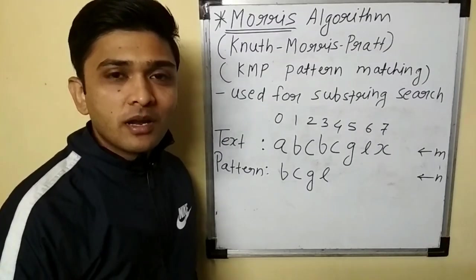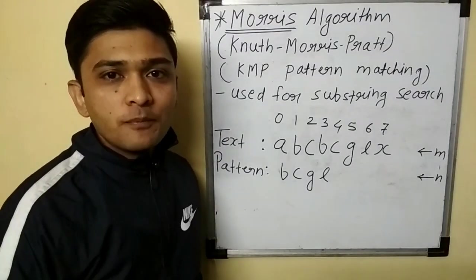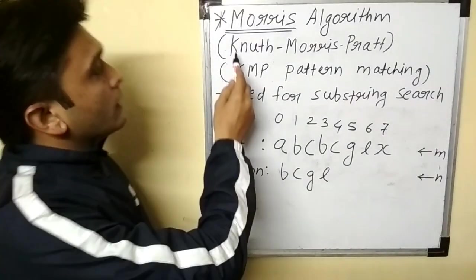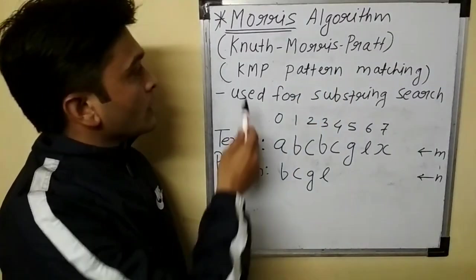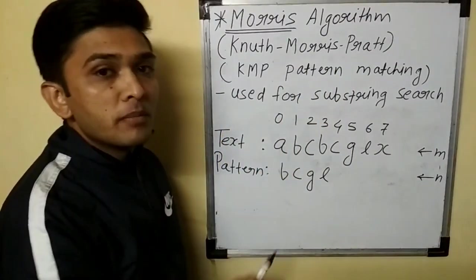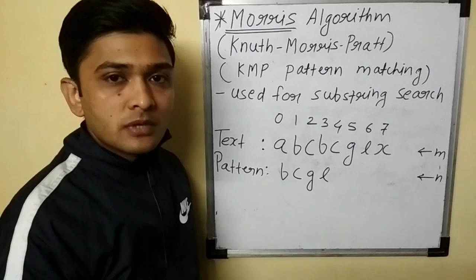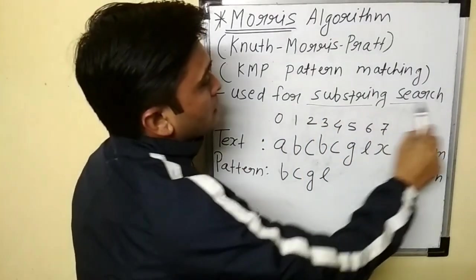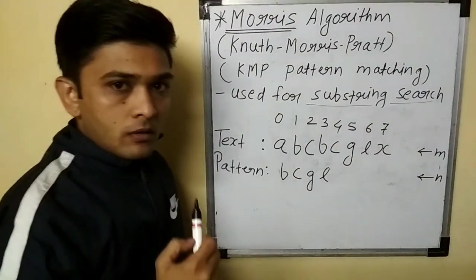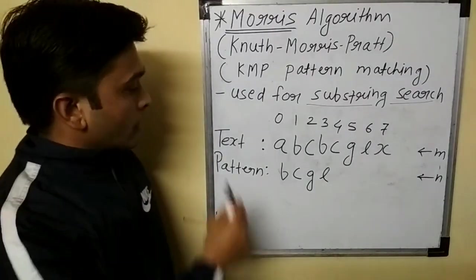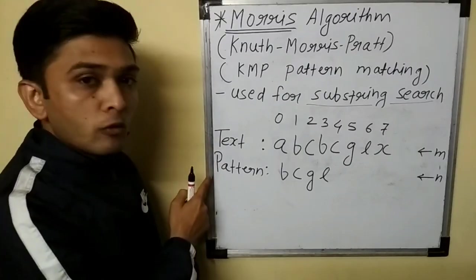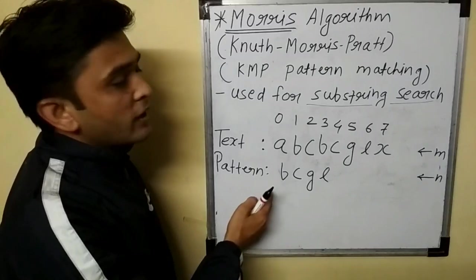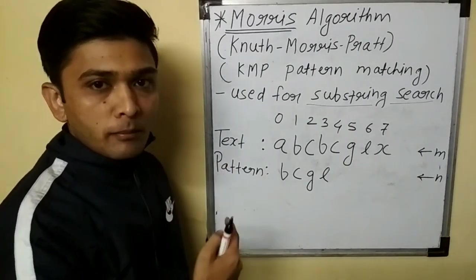Hello friends, my name is Yogesh Maramkar and today we are going to see Morris algorithm for substring search. It is also called as Morris-Pratt algorithm, KMP pattern matching, or KMP substring search. A text will be given and if I want to find out a particular pattern in that text, I can find it with the help of KMP pattern matching.